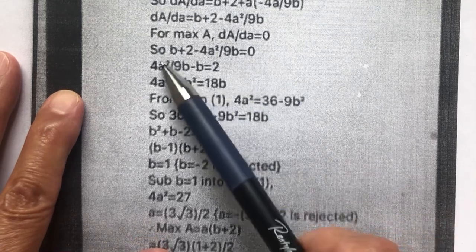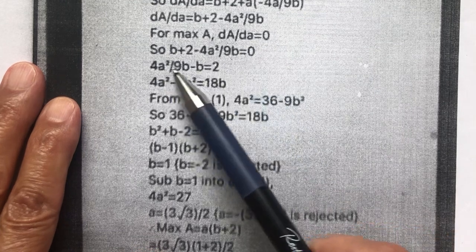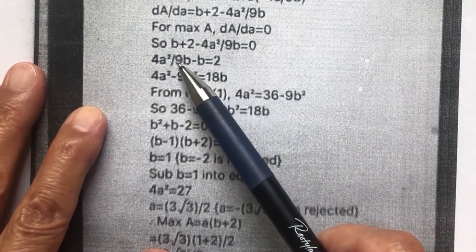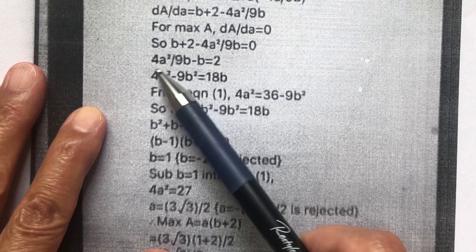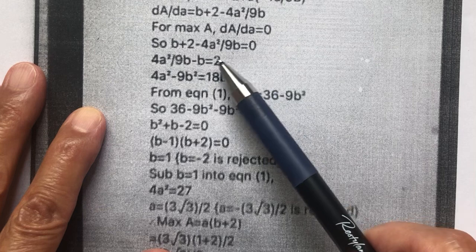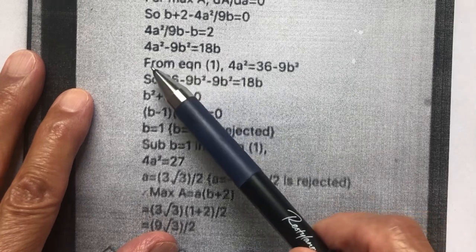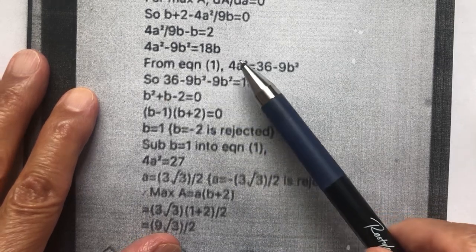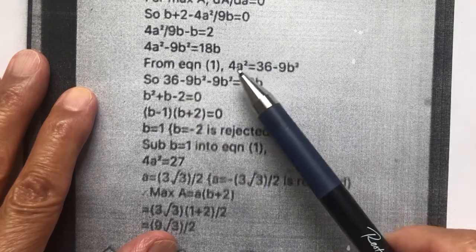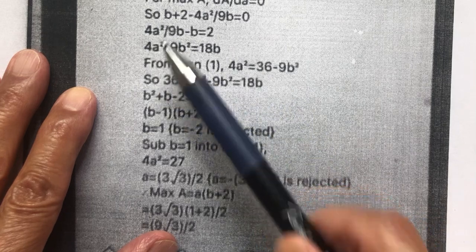So once I have this, the derivative equal to 0, I have this. Rearrange. Multiply this by the denominator 9b. I get this. 9b squared equals 18b. Using equation 1, I have this. I substitute for a squared into here. I get this.